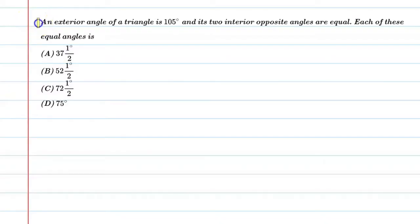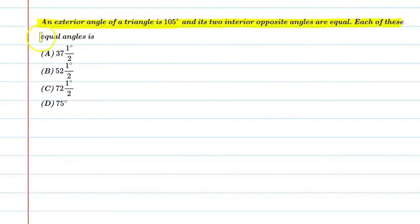Hello students, let's solve this question. An exterior angle of a triangle is 105 degrees and its two interior opposite angles are equal. We are saying that the exterior angle is given for the triangle and the interior opposite angles are equal.